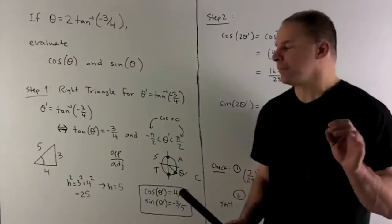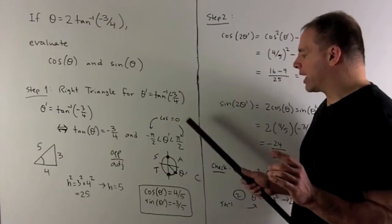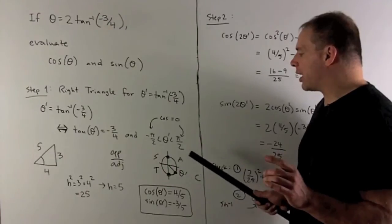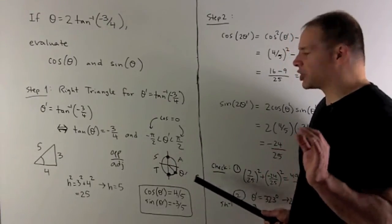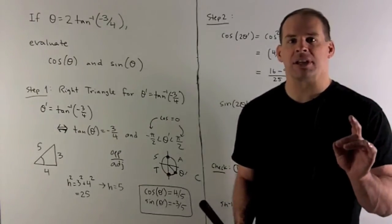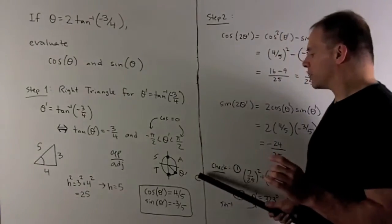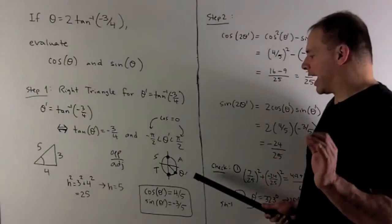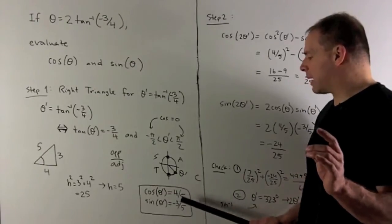So if we use the cast method, we'll have cosine in quadrant four, and then I go counterclockwise. So cosine, all, sine, tangent. And the name that I just put out for each quadrant, that's going to be positive. The rest are going to be negative. So in quadrant four, cosine is positive. Sine and tangent are negative. That means cosine is four-fifths, sine is minus three-fifths. So that's our first part.